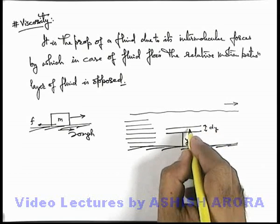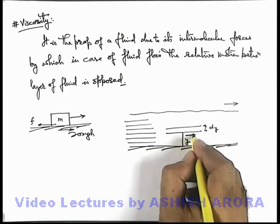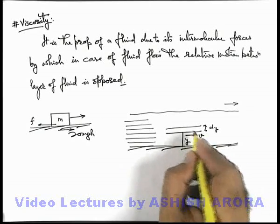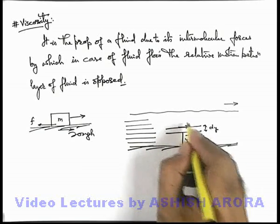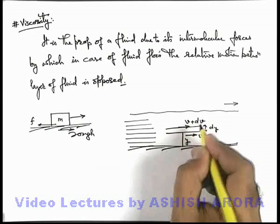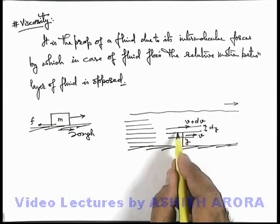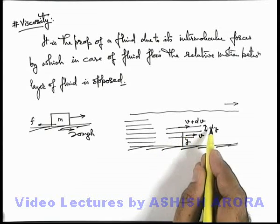So at a height y, if we consider a small layer which is of width dy, we can say if just below the layer, the fluid layer is moving at a speed v, then certainly we can state the upper layer would be moving with a speed v plus dv, because on the lower layer the friction is more, on the upper layer friction is slightly less, so this will be having slightly more speed.